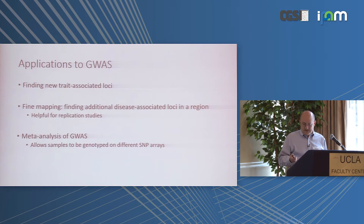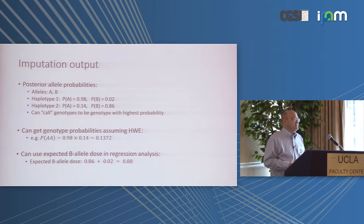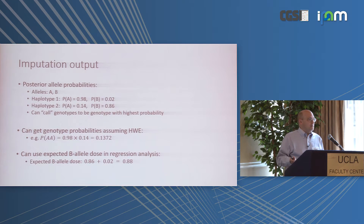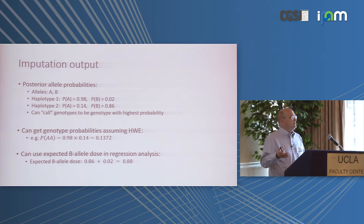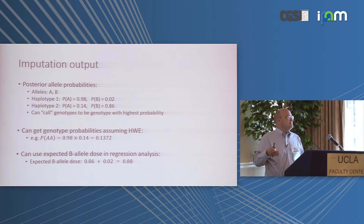The meta-analysis application has been very successful. What you get out of imputation is not necessarily like hangman, where you guess the most likely letter — it's a probabilistic output. Based on the reference data and the observed data in the sample, there's a certain probability that the allele is the A allele, or a certain probability that it's the B allele.